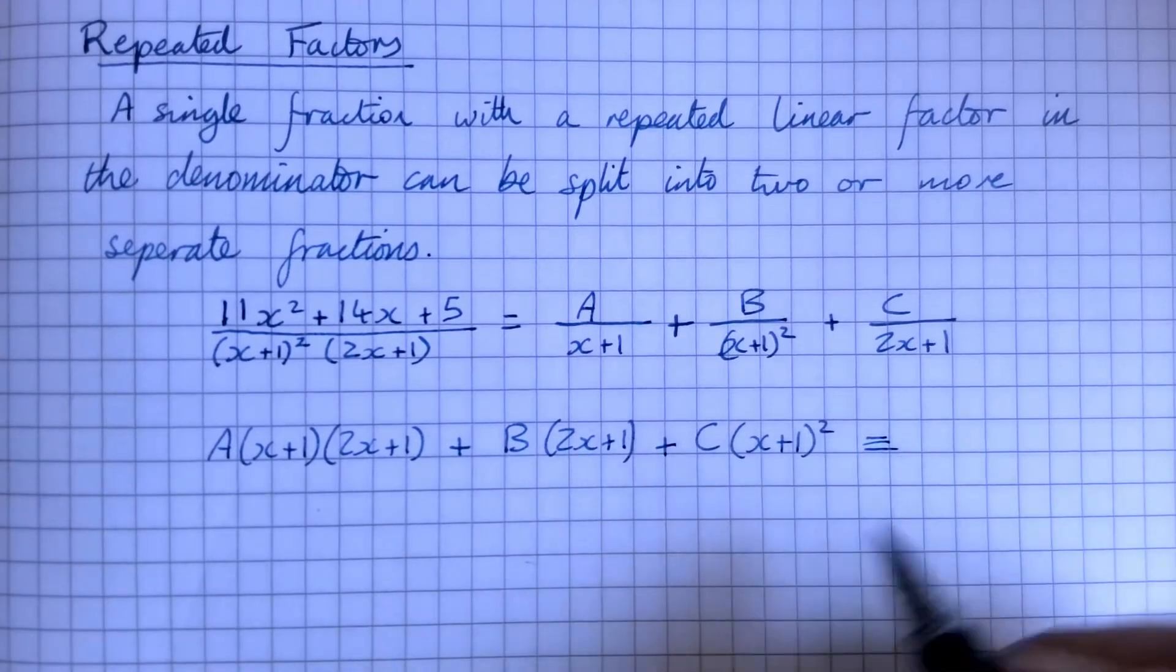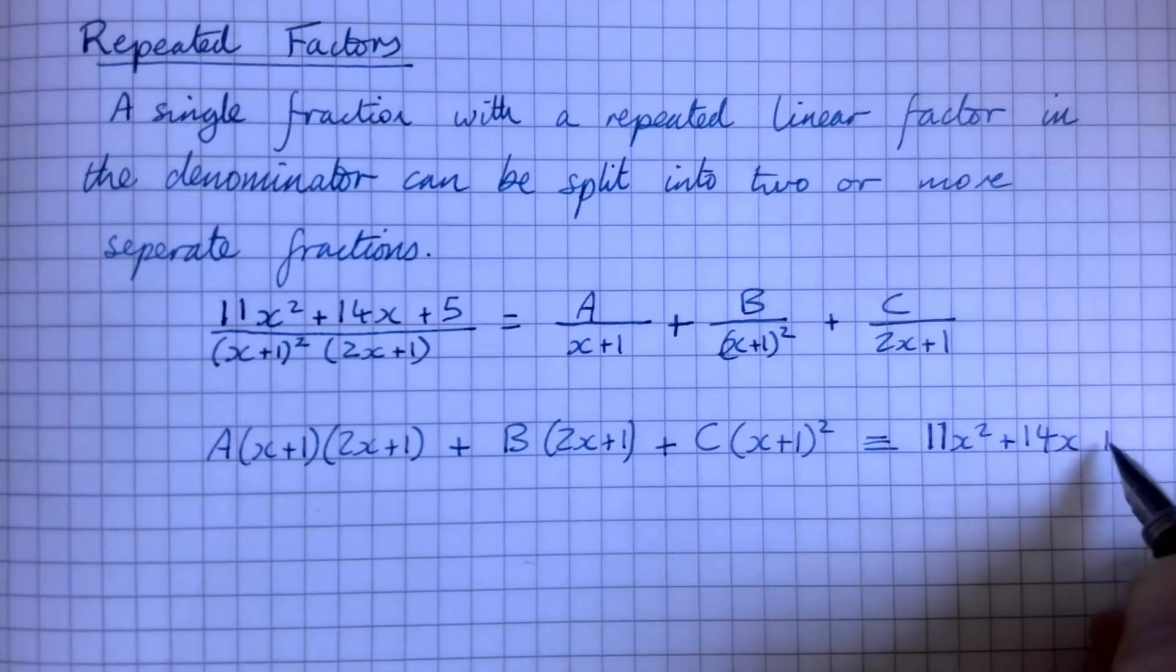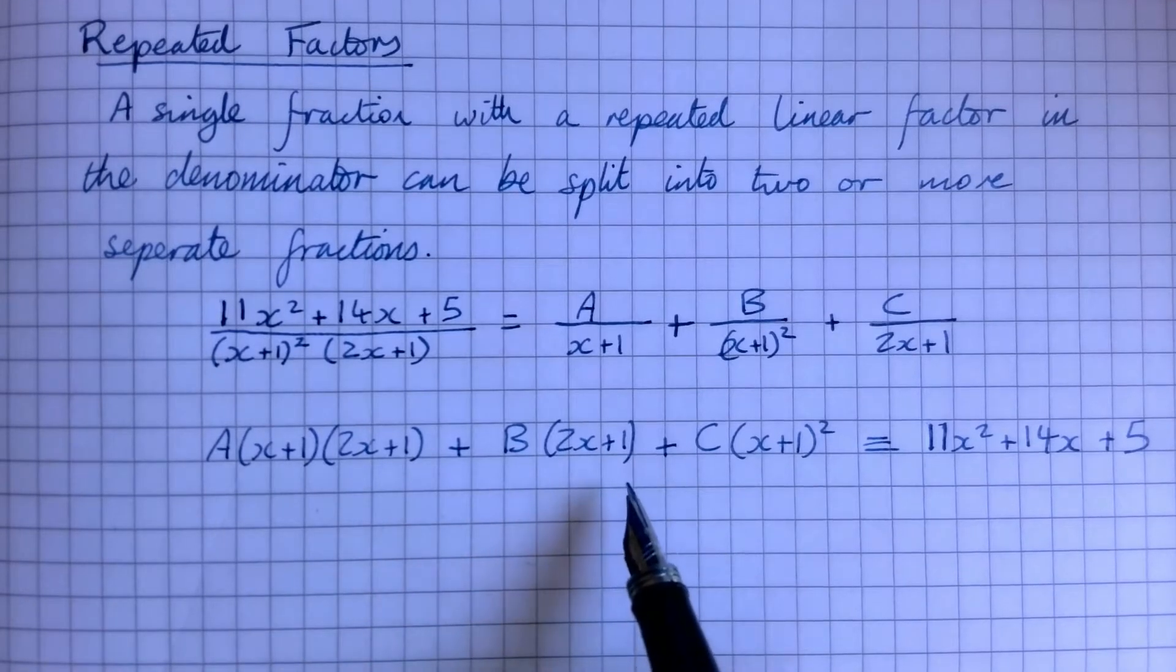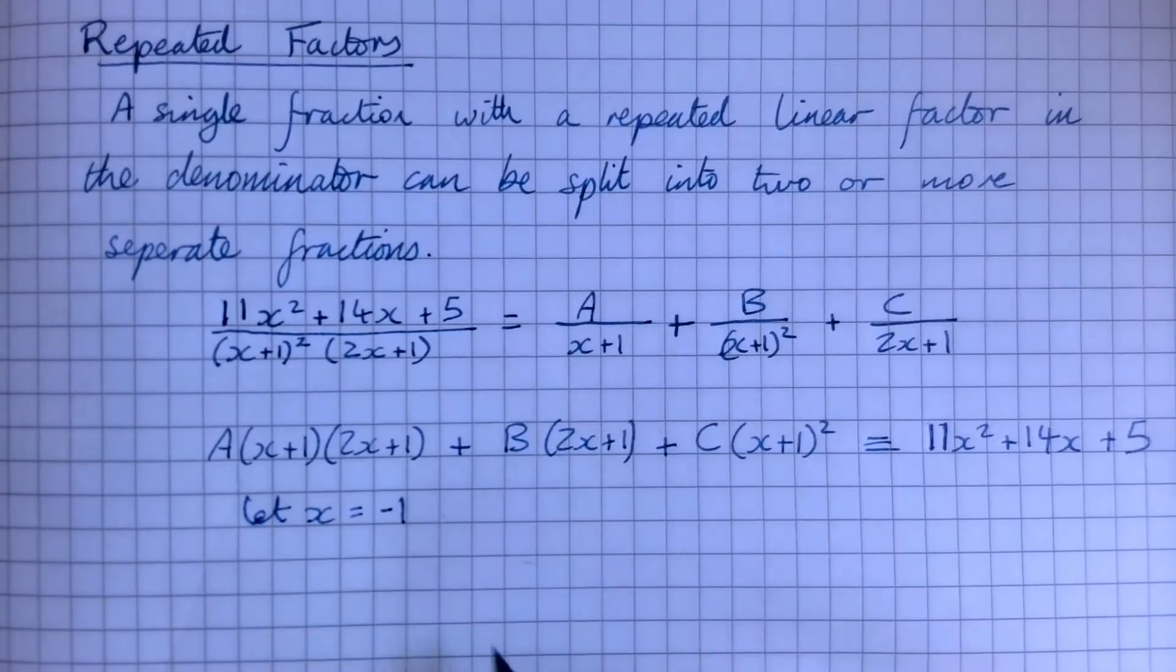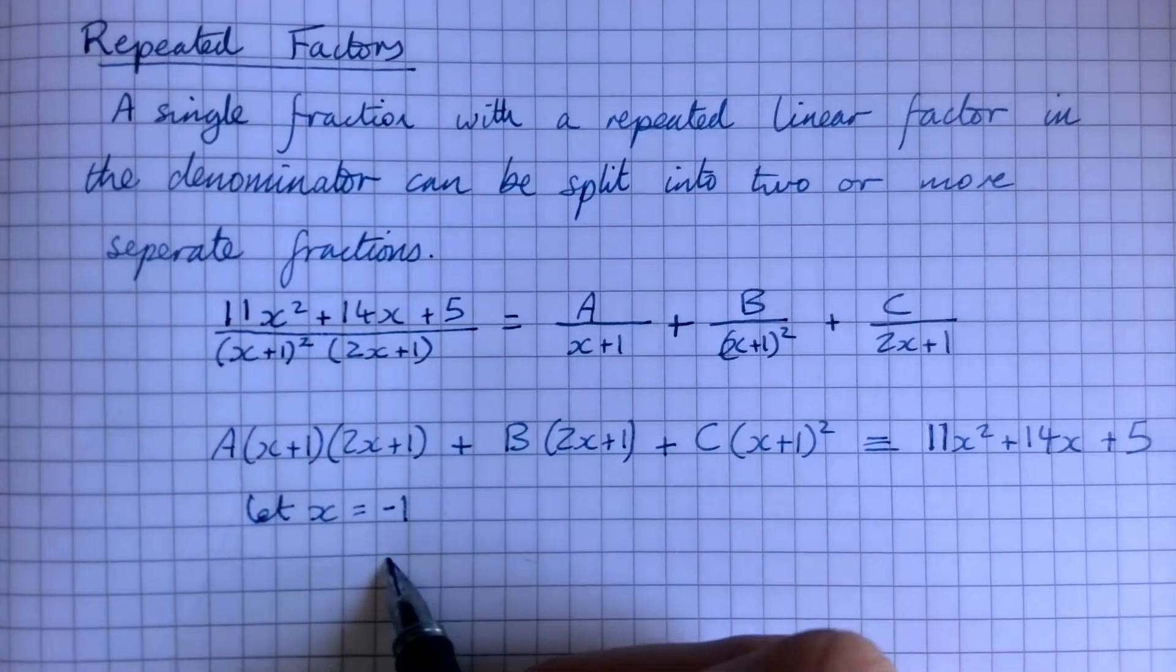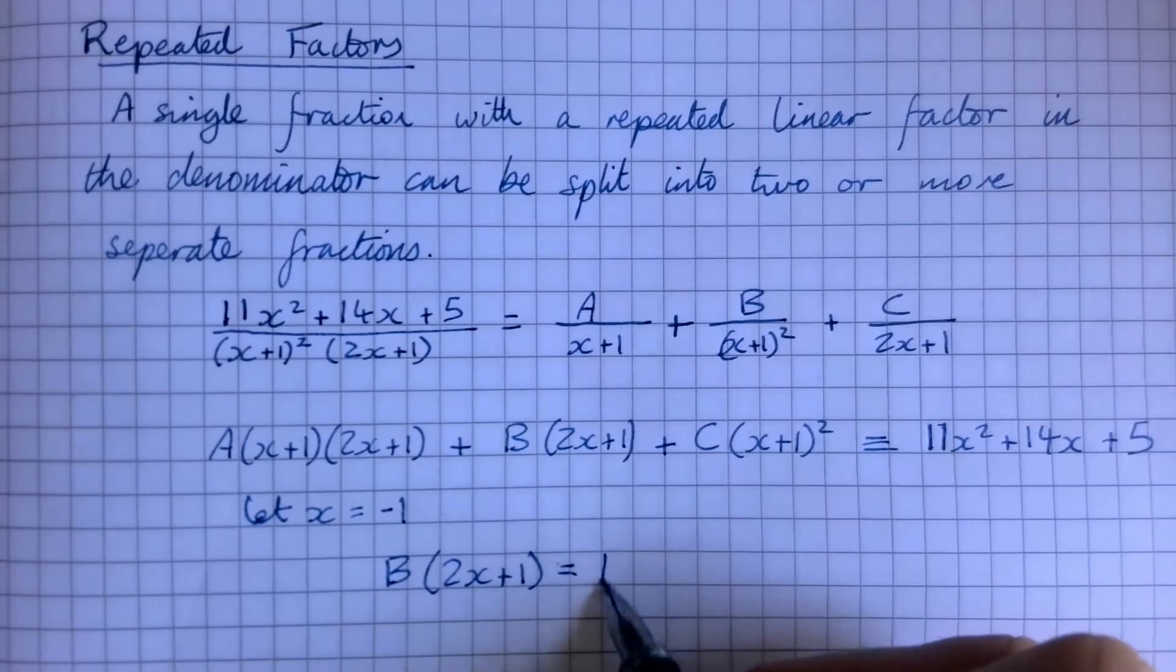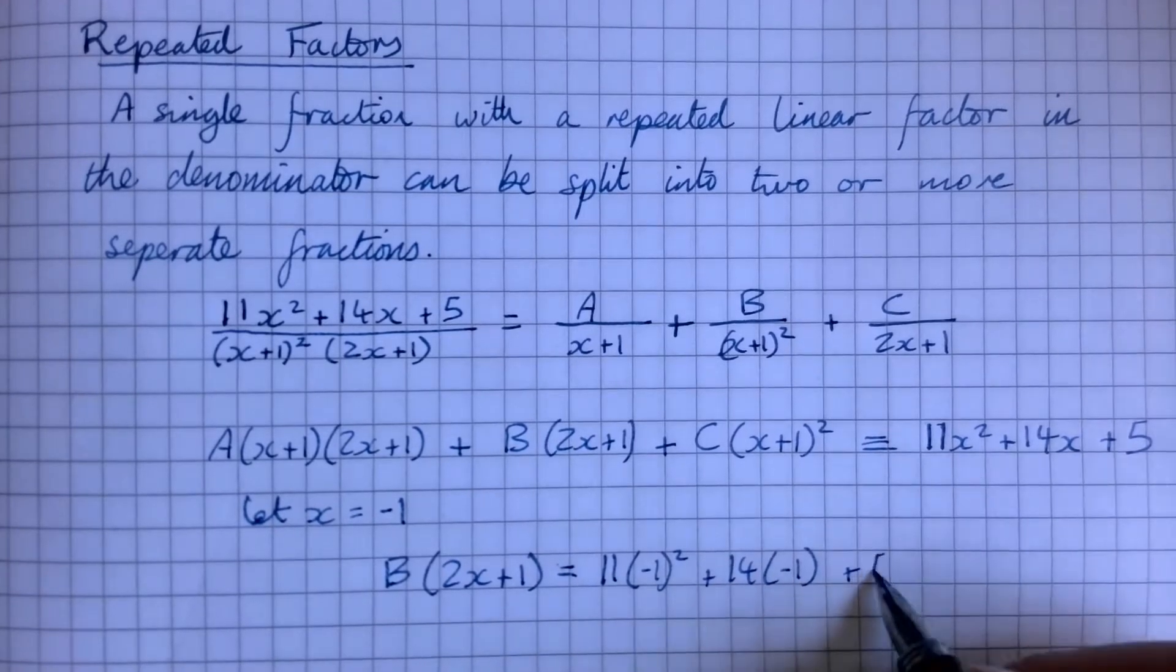And all of that is going to give us something identical to 11x squared plus 14x plus 5. Now when doing these, it's really nice to use a mixture of substitution and equating the like terms. So what we're going to start with is if we say that let x equal minus one, that's going to take out the A's because that'll be zero, that'll take out the C's because that'll be zero, and just leave us with B times two x plus one is going to be equal to 11 times negative one squared plus 14 times negative one plus five.